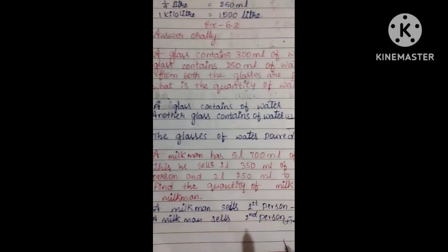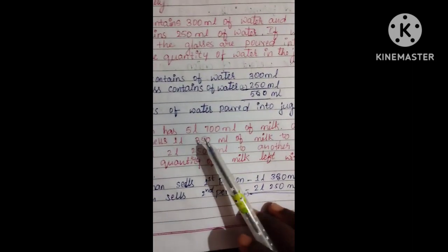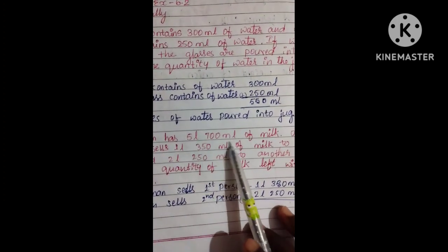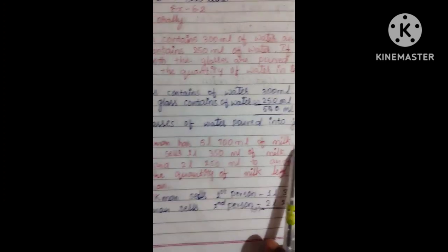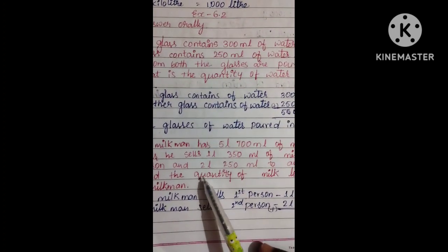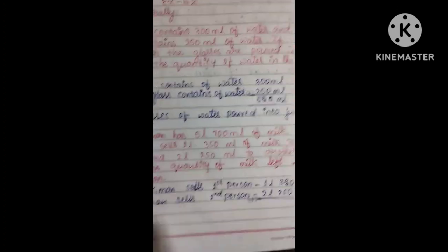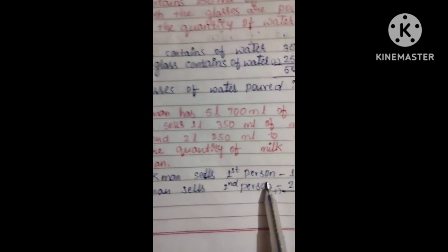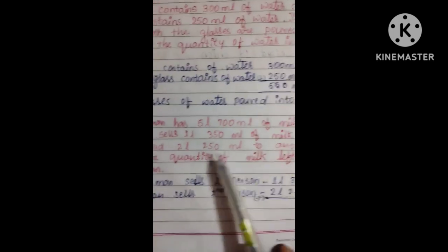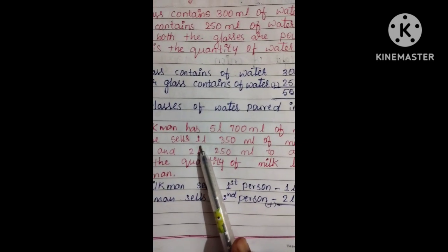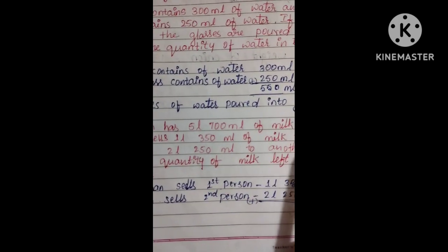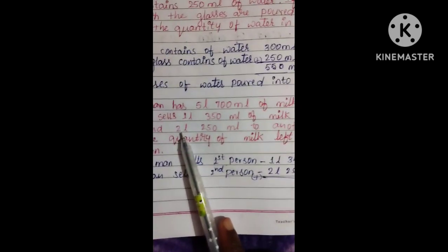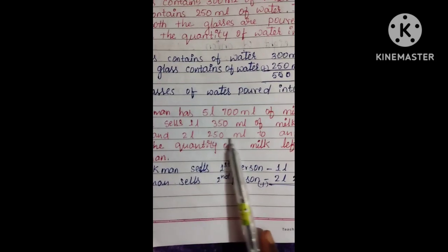Next question. A milkman has 700 ml of milk. He sells to one person 1 liter 350 ml, and to another person he sells 2 liters 250 ml.